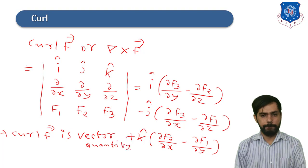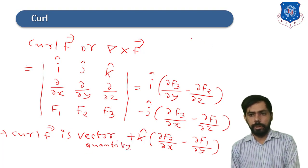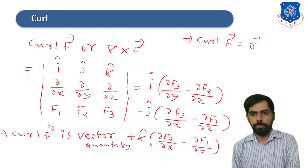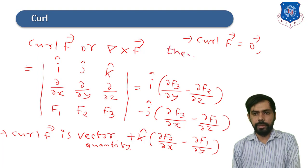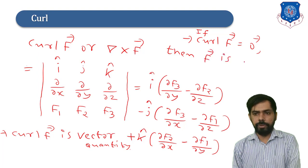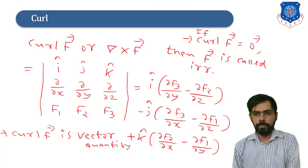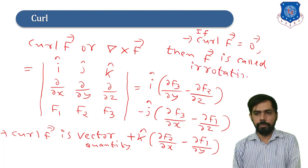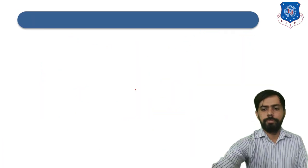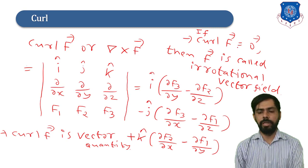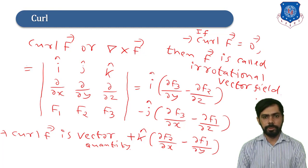If the curl of vector field f is equal to 0, then the vector field f is called an irrotational vector field. Now let us discuss examples related to this.